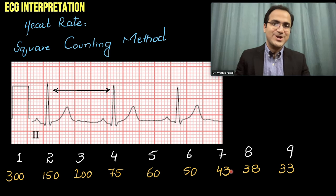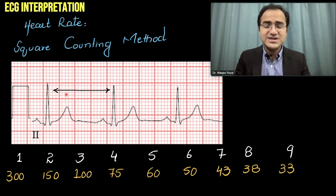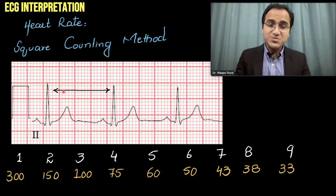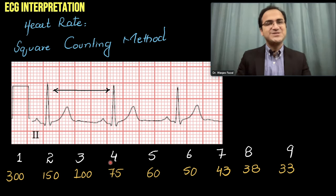Looking at this ECG, there are almost four large boxes between the QRS complexes, so the rate of this ECG is 75 beats per minute. This is the simplest method to calculate rate from an ECG.